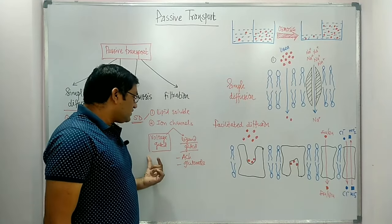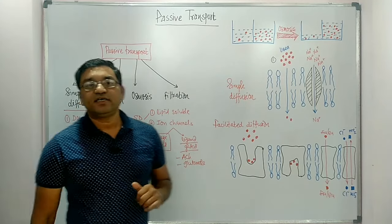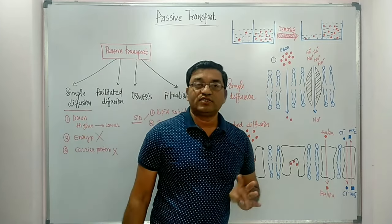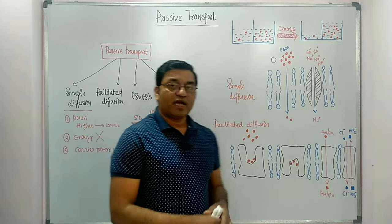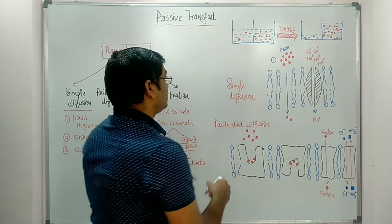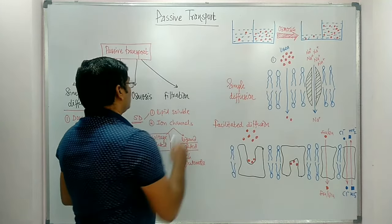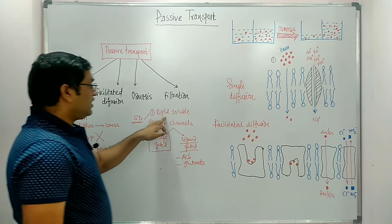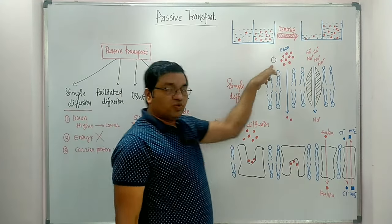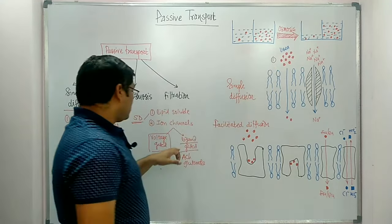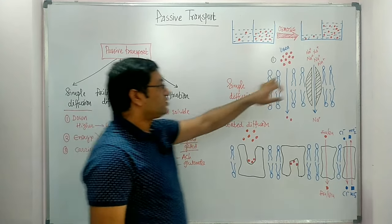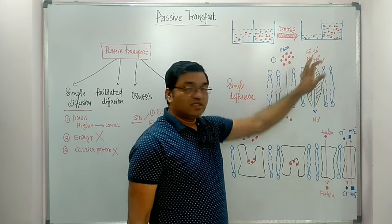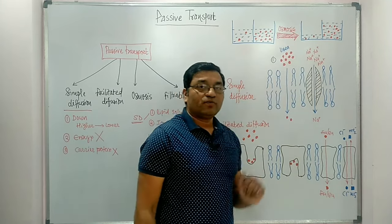So there are two types of Ion Channels: Voltage Gated and Ligand Gated. Examples of ions transported through these channels are Sodium, Potassium, Calcium, and Chloride. To summarize Simple Diffusion: two mechanisms — Lipid Soluble Compounds (examples: Urea, Oxygen) transported directly, and Ion Channels (examples: Sodium, Potassium, Chloride, Calcium).